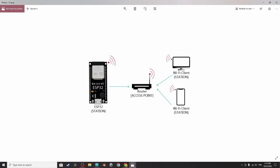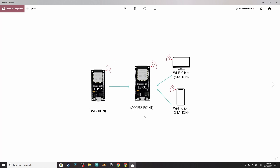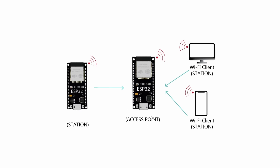If you don't know about IP addresses, don't worry. The router will assign some kind of address to all of the devices, including the ESP32 in Station Mode, so that these devices can communicate with each other. We can then use the IP address of the ESP32 to control its built-in LED.